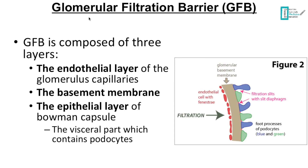In the beginning I'm going to talk about the glomerular filtration barrier. The glomerular filtration barrier is composed of three main layers: we have the endothelial layer, we have the basement membrane, and then we have the epithelial layer of the Bowman capsule, which has special cells called podocytes.